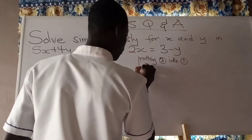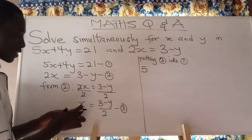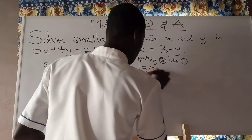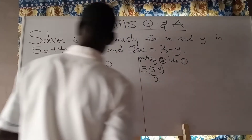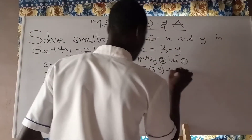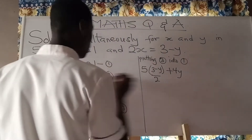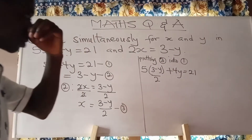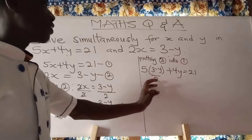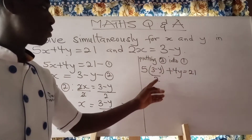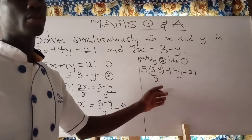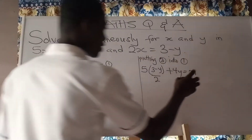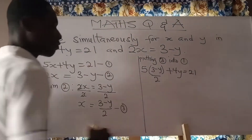So I have 5 multiplying x, and x is 3 minus y all divided by 2, in brackets. So the equation becomes: 5 times the quantity (3 minus y) over 2, plus 4y, equal to 21. This is now in fraction form, so we need to take off the denominator first. The other terms have no denominator, so we assume they are divided by 1.